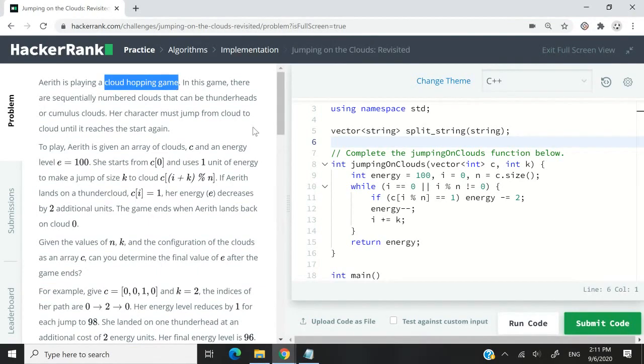The whole instructions here are about a cloud hopping game. So in our array, the values indicate the type of the clouds. If we see zero in the array, it means it refers to a cumulus cloud. If we see one, it refers to a thunderhead.